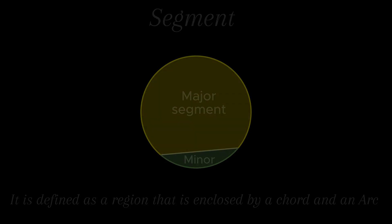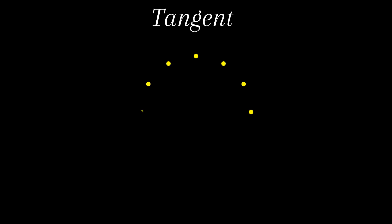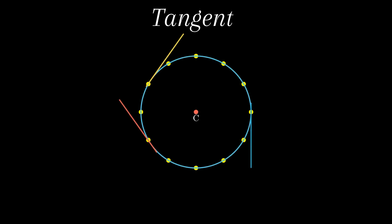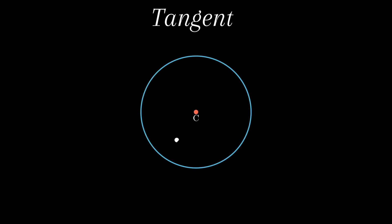Moving on to the next part of the circle — the tangent. Tangent is derived from the Latin word 'tangere' which means to touch. Thus, a tangent to a circle is a line that touches the circle at exactly one point. It should be noted that no tangent line can be drawn through a point inside a circle.